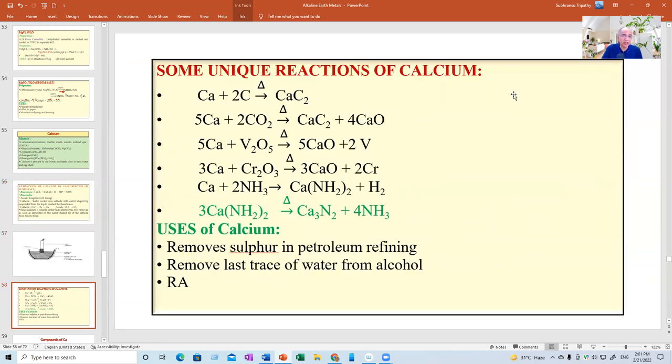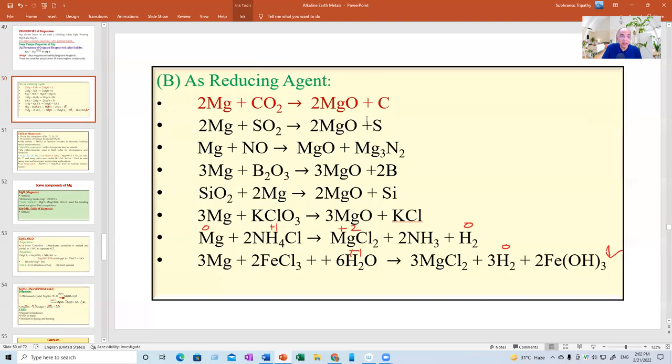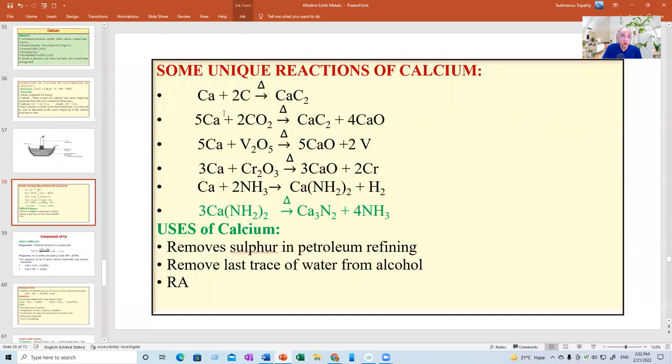Now, some of the unique reactions of calcium. Like carbon, this also we had done. With carbon or coke, it produces calcium carbide. Even with calcium carbon dioxide, it doesn't produce carbon. Magnesium was producing carbon, you see. Look to the difference. Magnesium was producing carbon, but calcium will not produce carbon. Calcium will produce calcium carbide and calcium oxide in both the cases.